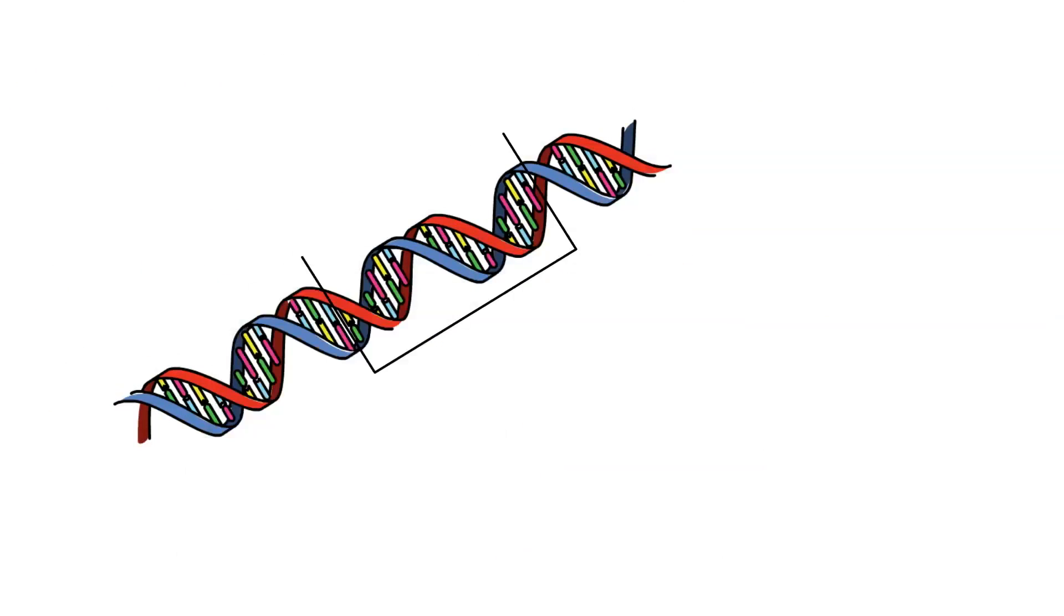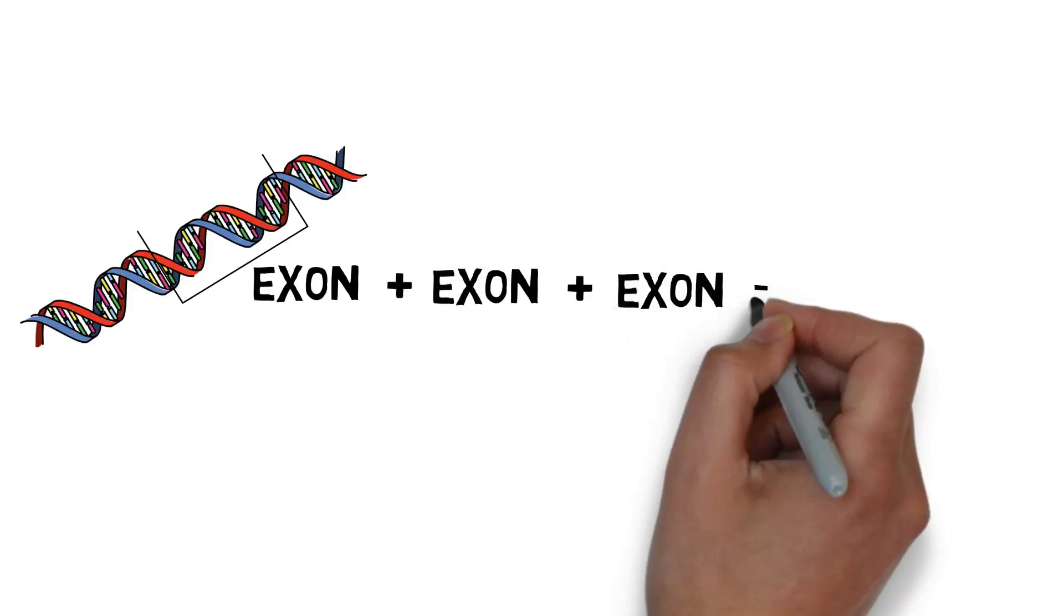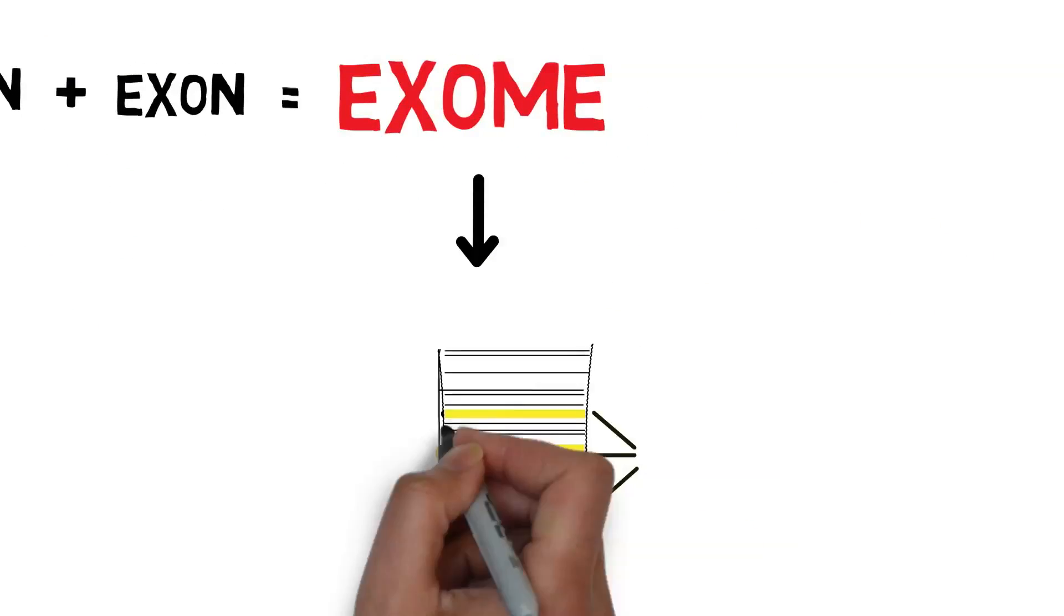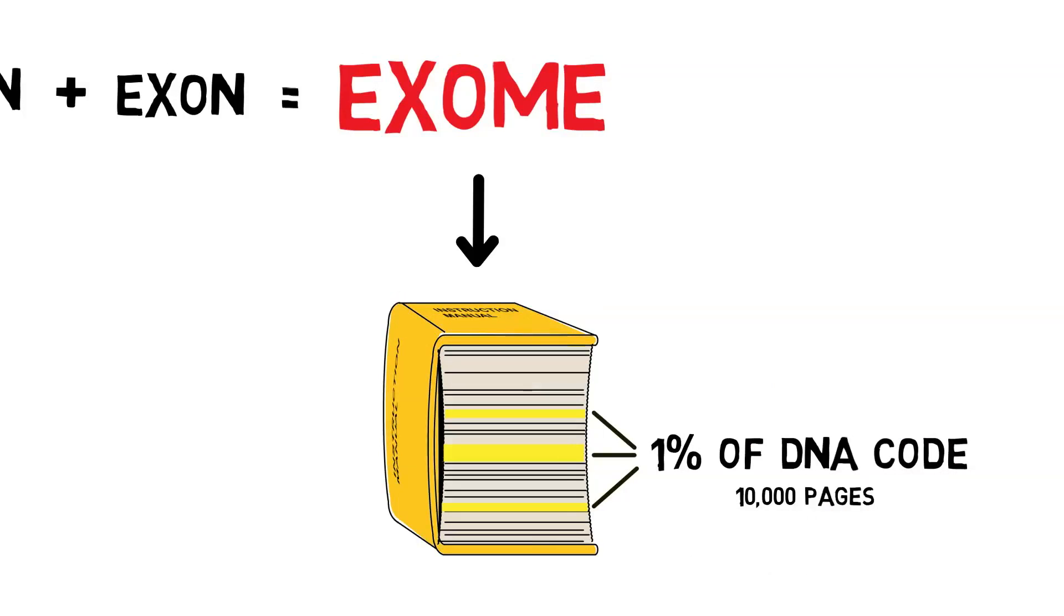The exome is part of a gene that, if changed or altered, can cause health problems. All the exons together are the exome. The exome makes up about 1% of the DNA code, or 10,000 pages of our million-page book.